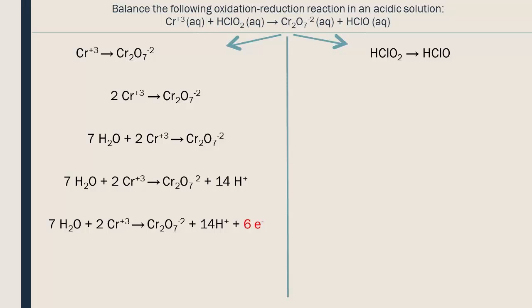We repeat the same steps for the other half reaction. First, we balance the elements other than H and O. The chlorines are already balanced. Next, we balance the oxygens by adding H2O molecules. We balance the hydrogens by adding H plus ions. Finally, we balance the charges using electrons.